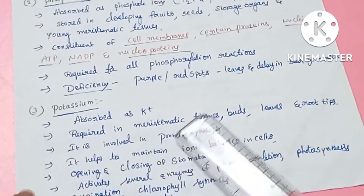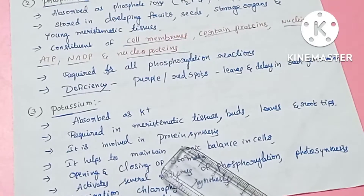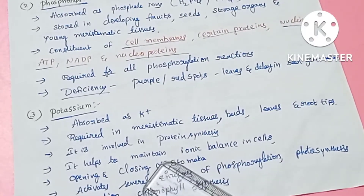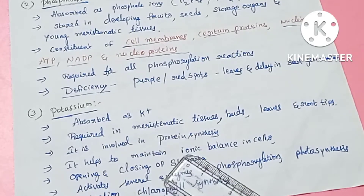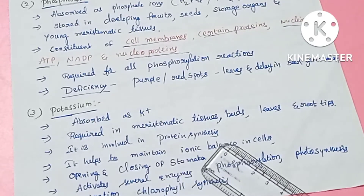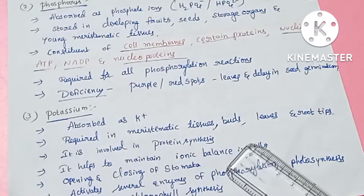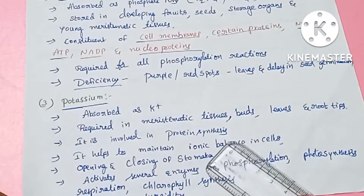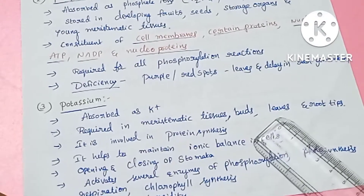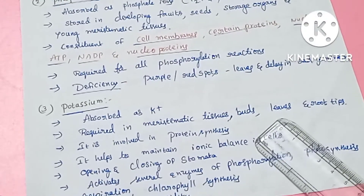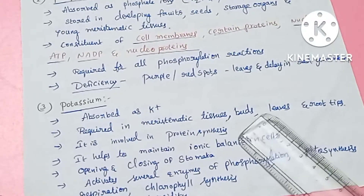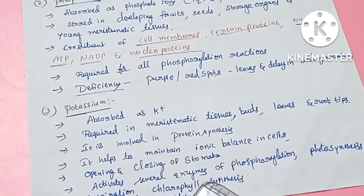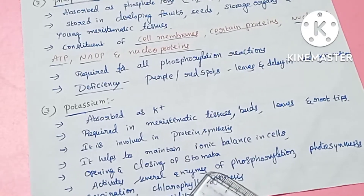Potassium is required in meristematic tissues — buds, leaves, and root tips. Potassium ions are important for the closing and opening of stomata, and help maintain ionic balance in cells.